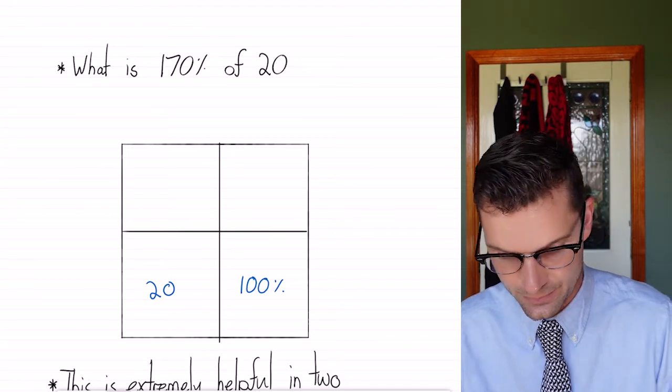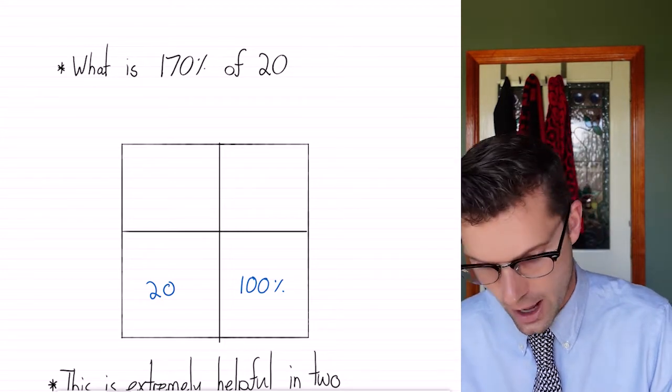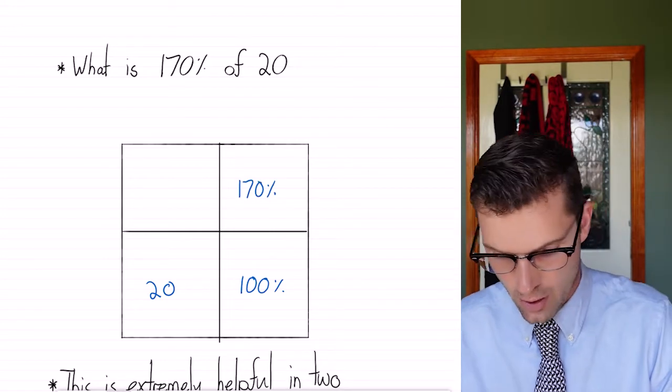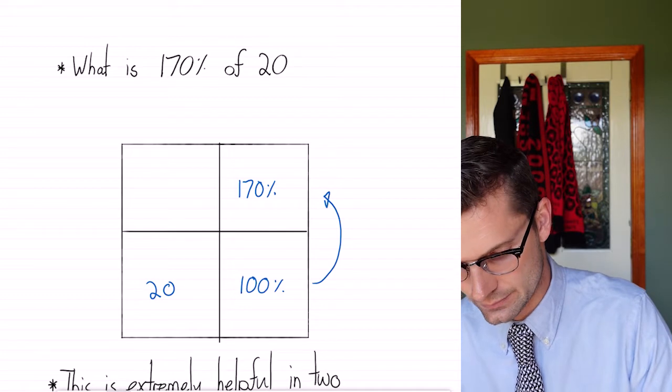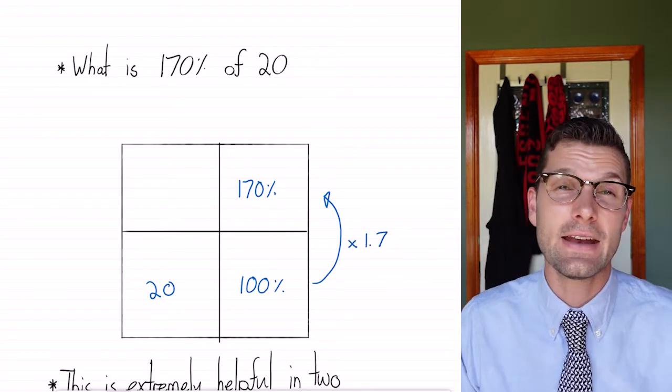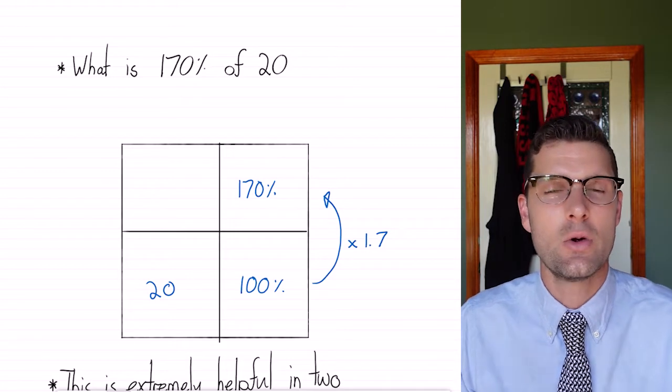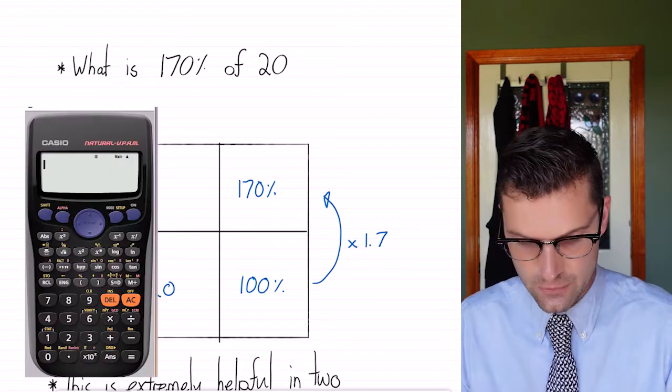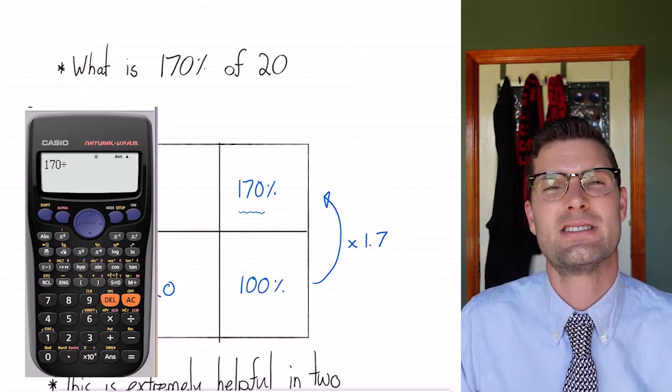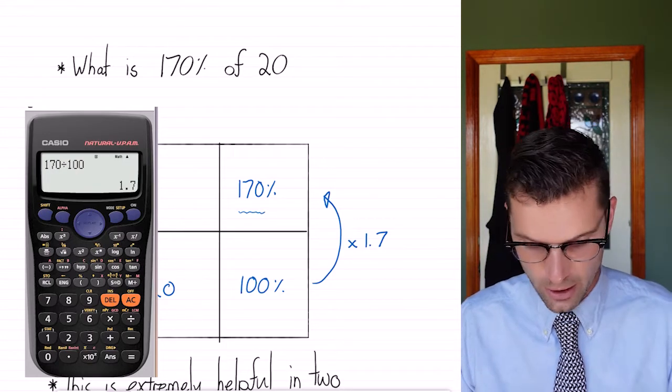And I've got to change it to 170%. So I need to multiply this thing by 1.7. Again, if you're struggling to find out which number you've got to multiply by, if you do this top one divided by the bottom, it'll give you 1.7, which is telling us what to multiply by.